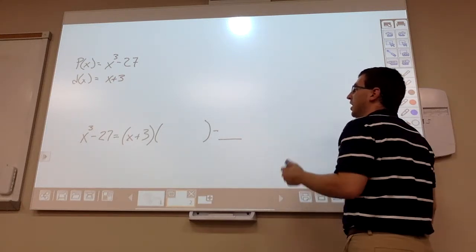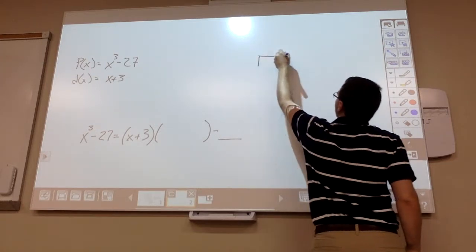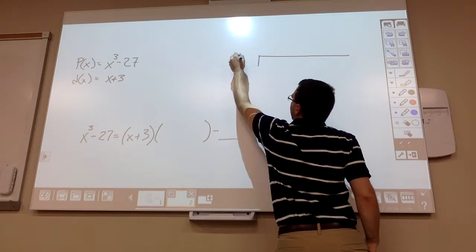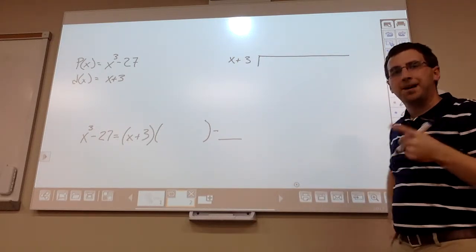So for here, to do long division, we've got to remember a couple of things. When we set up our long division, remember x + 3 is our divisor, that's what goes on the outside here, but the x³ - 27.